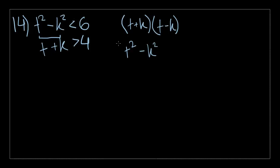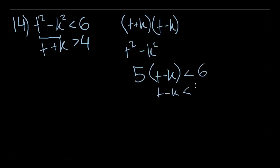You might think of a number greater than four for t plus k, and trying to work through it you get five times t minus k is less than six, so t minus k is less than six-fifths. That's not really going to help you find the value of t. However, if you notice the first inequality involves differences between perfect squares. Since t and k are positive integers, squaring them gives perfect squares.